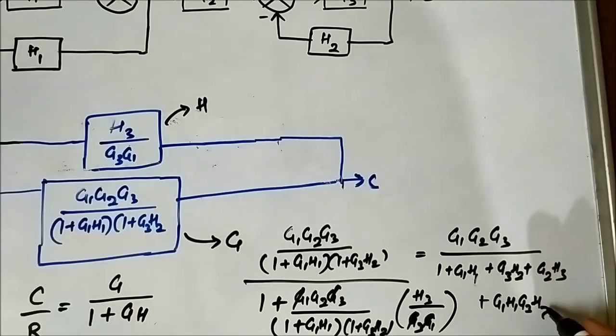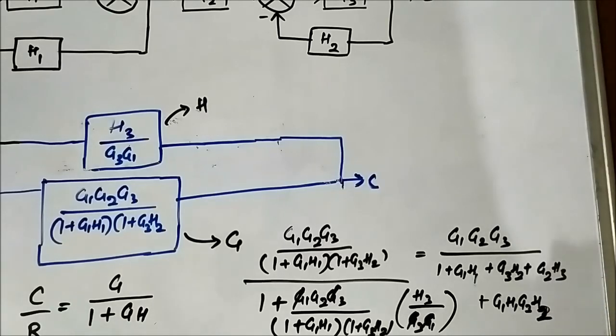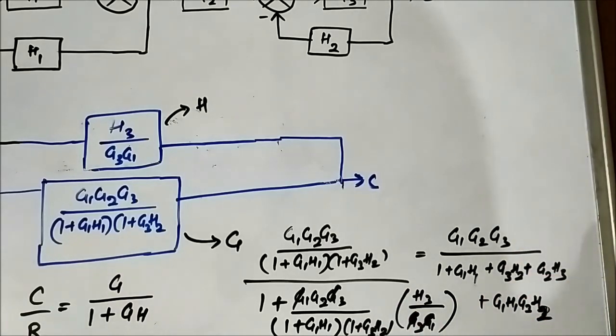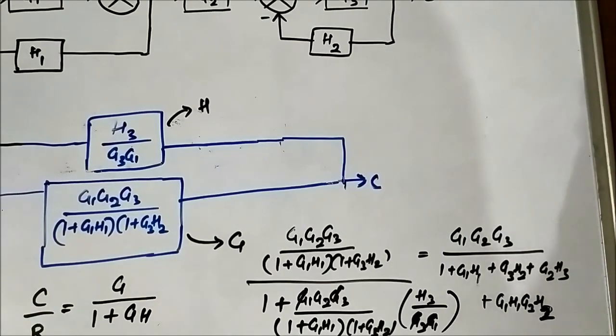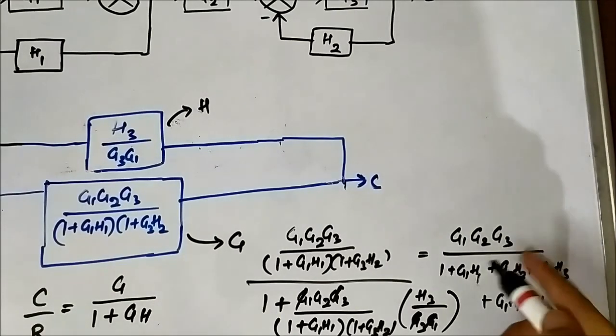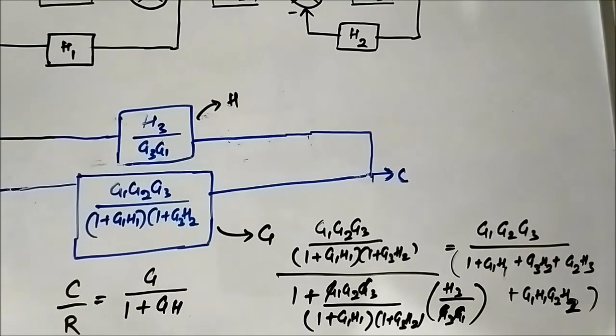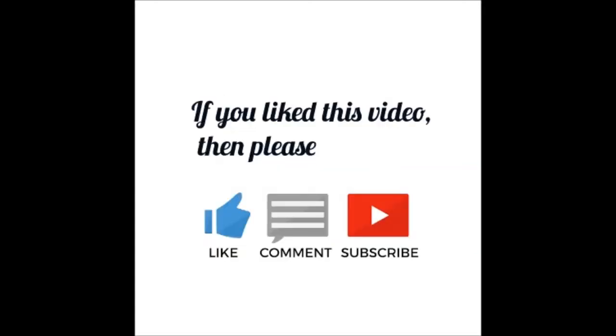So you also do it yourself — simplify and check whether you are getting this expression or not. This is the final simplified expression: G1·G2·G3 / (1 + G1·H1 + G3·H2 + G2·H3).